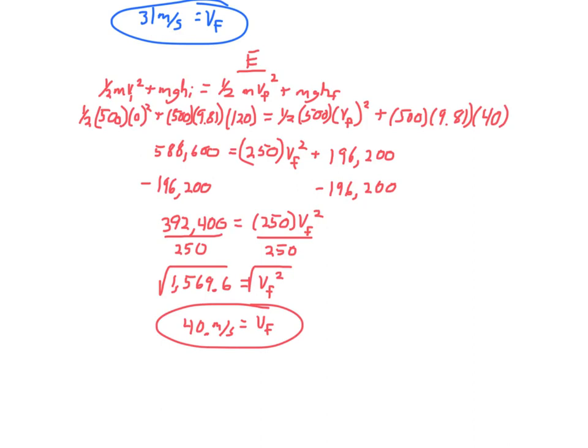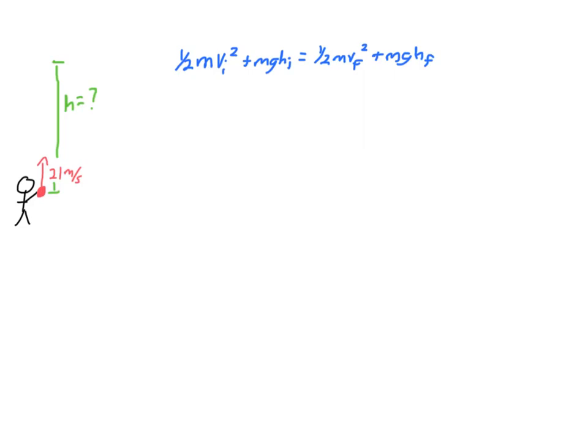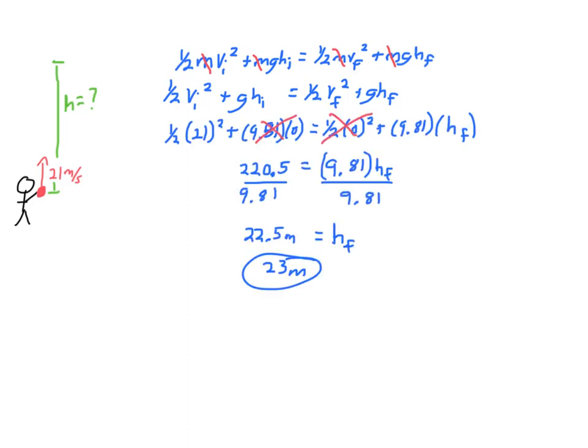I don't want you to be under the illusion that conservation of energy is always about solving for a final velocity because it might not be. It depends on what you're given. For example, if you know how fast the car is going down here at C, you could be asked how high up did it start? Or maybe a problem like throwing a ball straight up in the air, 21 meters per second. What's its maximum height? You could do that through conservation of energy where HI is zero, you know the initial velocity, masses cancel out, and the final velocity at maximum height is zero.